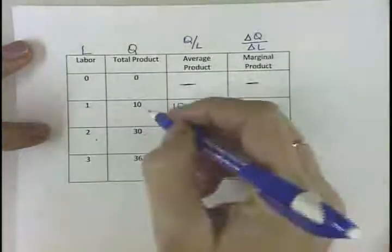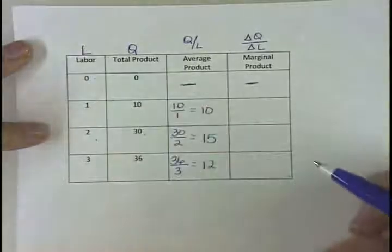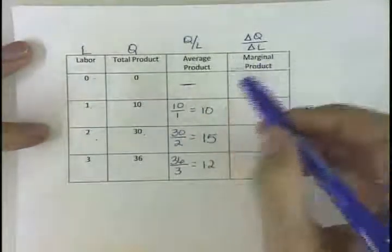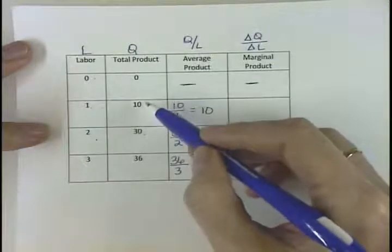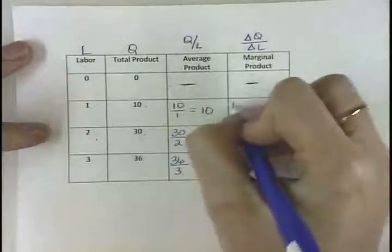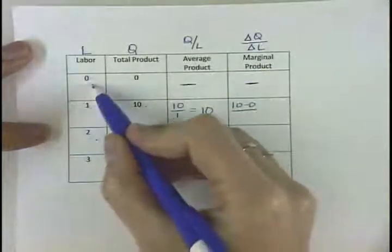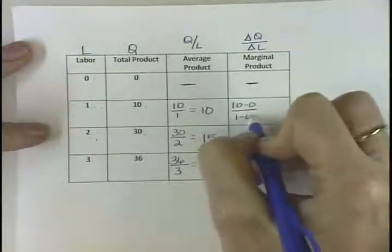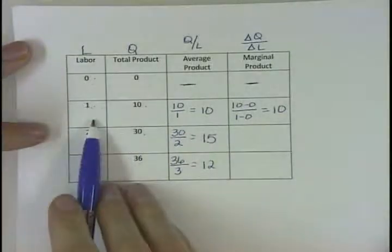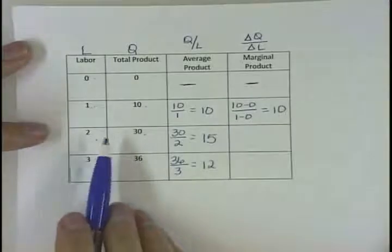Again we don't have one here for zero, so if we're moving from zero units of labor to one unit of labor, what is that first unit of labor going to add to my production? We're going to take the change in total product — the change in quantity — which is 10 minus zero, and our change in labor is 1 minus 0. So 10 divided by 1 is 10. That first unit of labor adds 10 units to production.